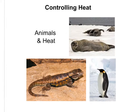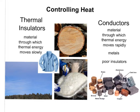A lizard's shiny scales reflect the sun's rays to prevent overheating, and a penguin's black feathers absorb more radiant energy to keep it warm. So when we talk about controlling heat, we need to know the difference between thermal insulators and thermal conductors. Thermal conductors are materials through which thermal energy moves rapidly — like metals.